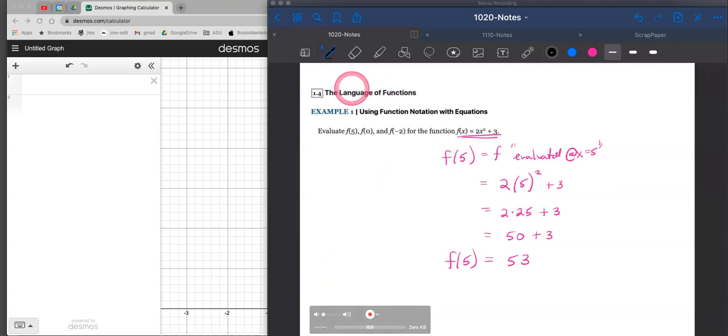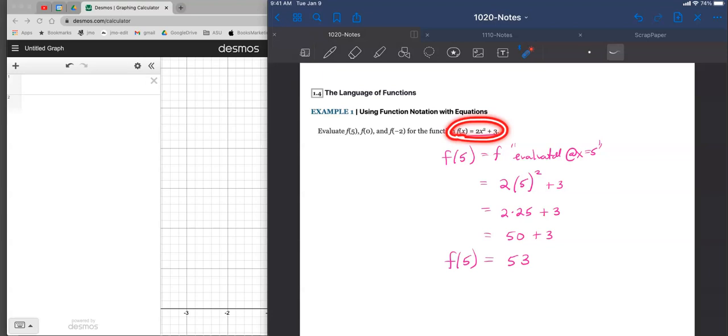Hey y'all, this is a quick video on section 1.4 where we're talking about function notation and how those relate to equations and maybe solutions. So here was a problem we did in class. We can see that here is a function was given to us. By function we mean that a formula was given to us, y is equal to f of x of this particular form.